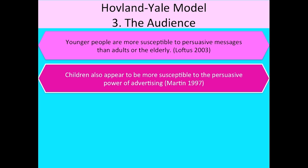The third part of the Hovland-Yale model is about the audience. Loftus (2003) found that younger people are more susceptible to persuasive messages than adults or the elderly. Martin (1997) found that children also appear to be more susceptible to the persuasive power of advertising. So if you're advertising to children it's easy, but if you're trying to persuade adults or the elderly, you might have to be more creative in your advertising.